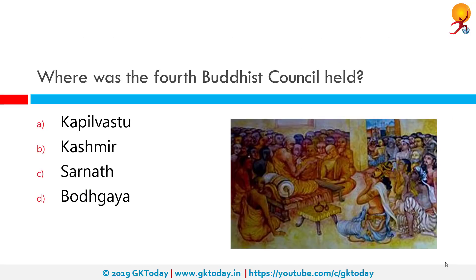Where was the fourth Buddhist council held? The correct answer is Kashmir. The first Buddhist council was at Rajgir, the second at Vaishali, the third at Pataliputra, and the fourth Buddhist council actually refers to two separate Buddhist council meetings — the first held in Sri Lanka and the other at the Sarvastivada school in Kashmir around the first century AD.